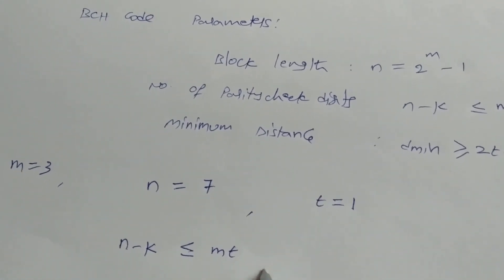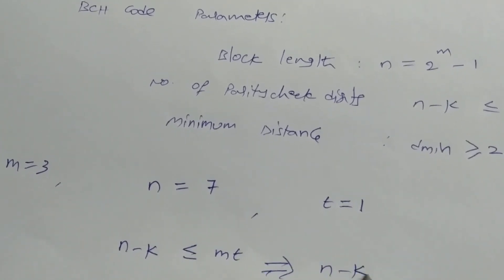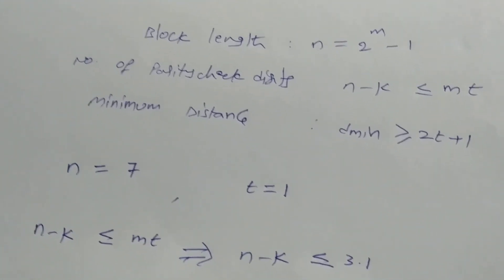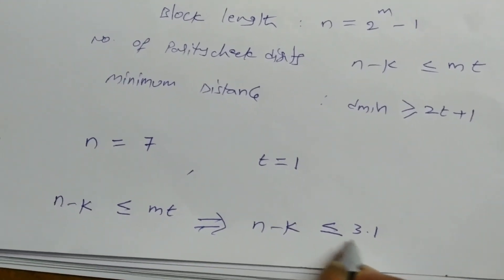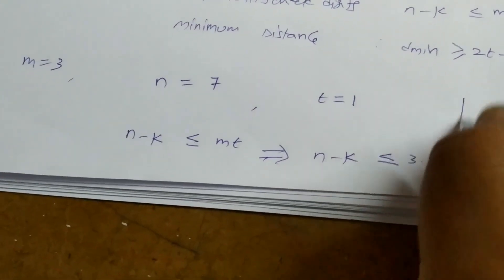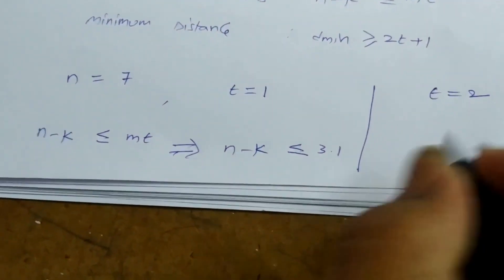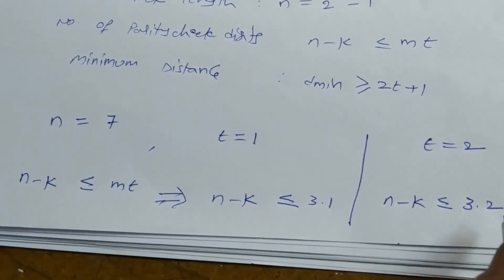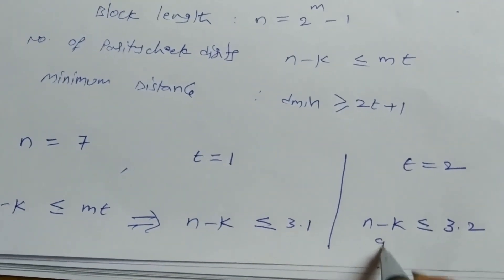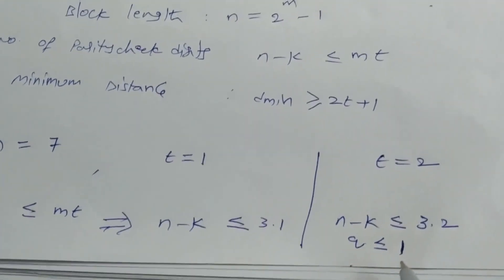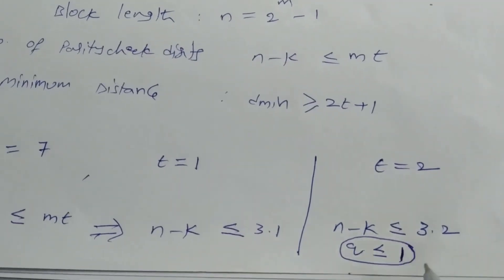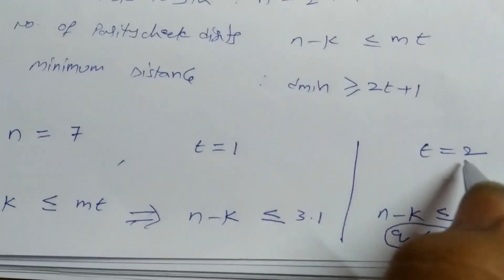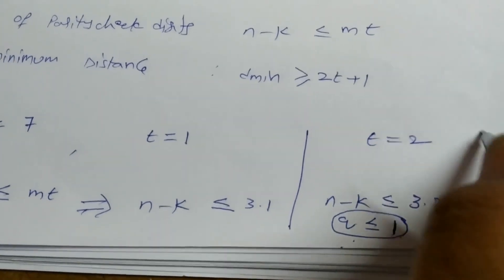For t equal to 1, n minus k, which we can denote as q, must be less than or equal to 3 into 1, so q is less than or equal to 3. If we take t equal to 2, then n minus k must be less than or equal to 3 into 2, meaning q must be less than or equal to 6. This is quite difficult to satisfy.